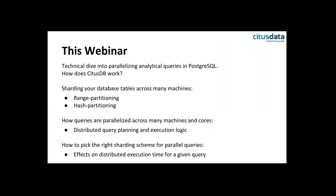Today I want to do a bit of a technical dive into how that actually works. First, we'll look at different ways of sharding a database across a cluster of machines — particularly range partitioning and hash partitioning. Then I want to look at the logic behind how queries are parallelized across many machines and cores. Finally, I want to bring those two things together, because picking different sharding schemes will have performance implications when doing parallel execution.